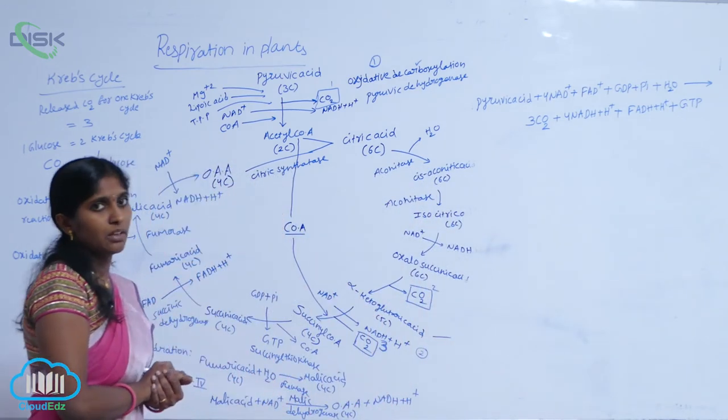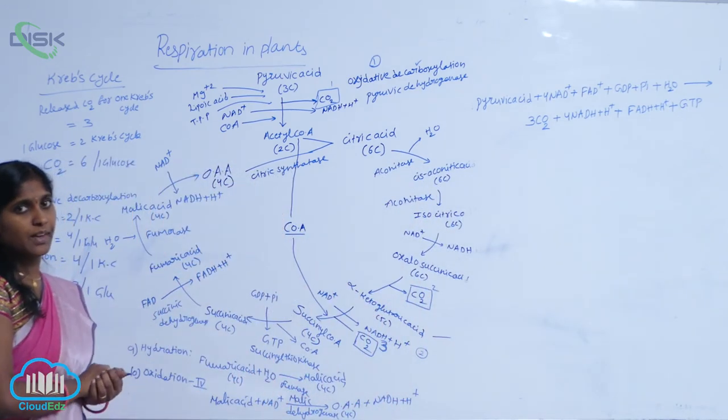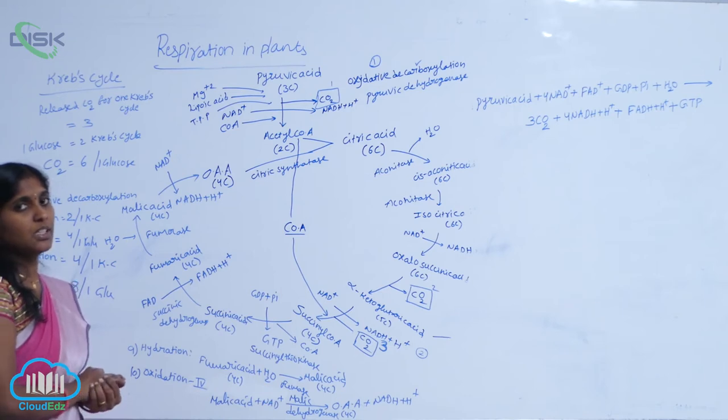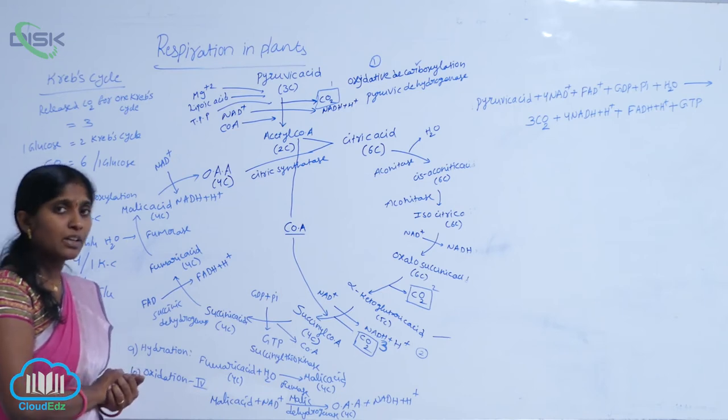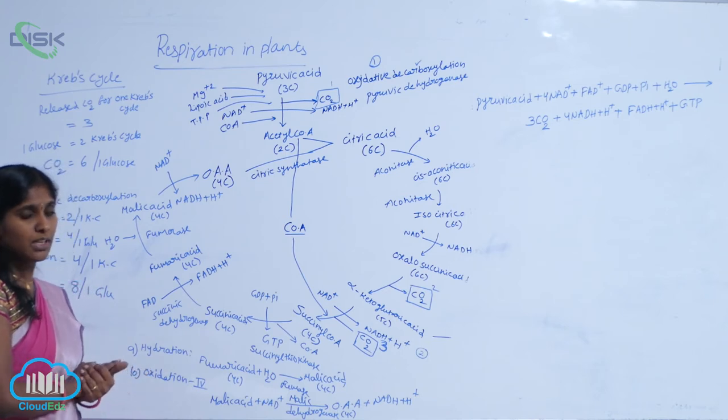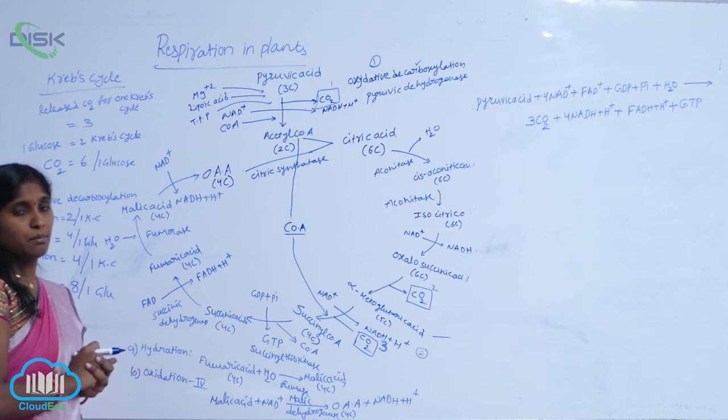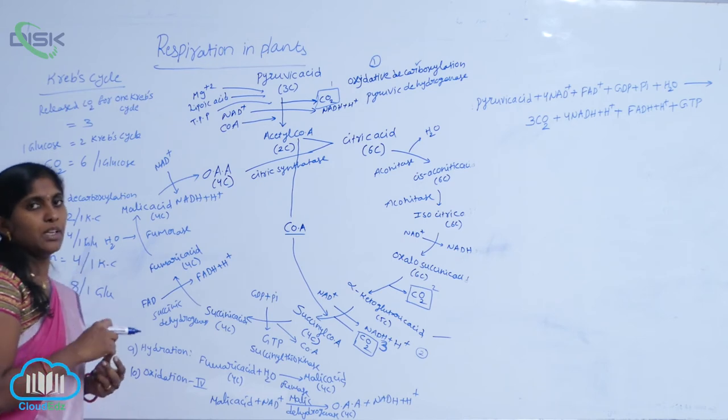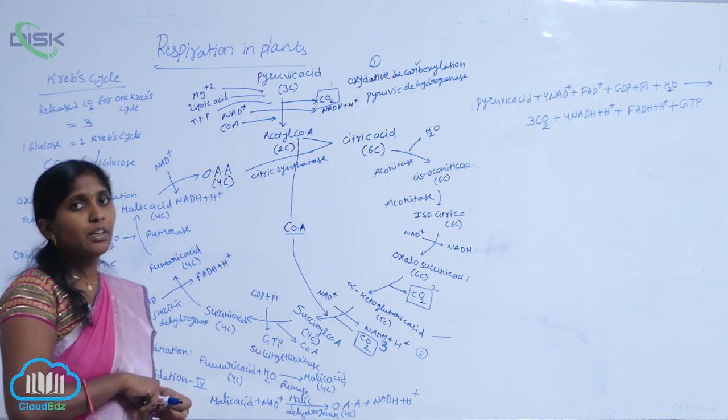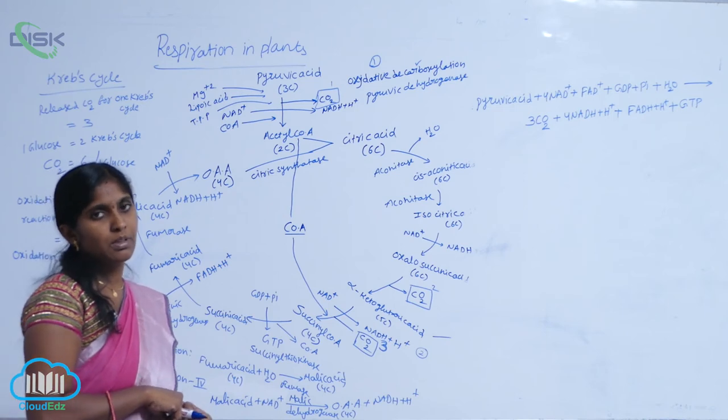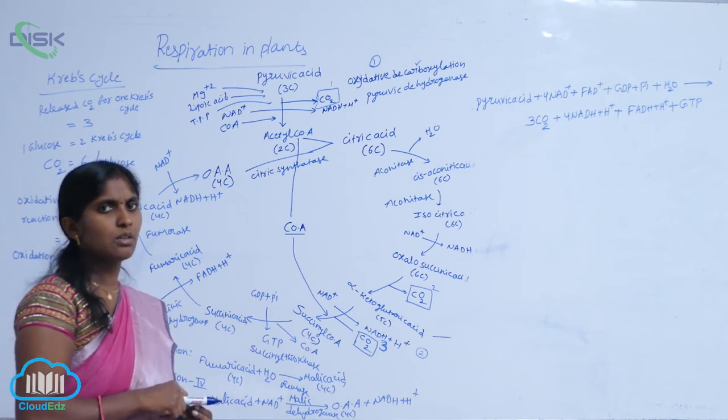You see here the oxidative reactions. During the oxidative reactions, the releasing of NADH and H+ ions are 4 only, but during the Krebs cycle, FADH2 also reduces - that is also oxidation.